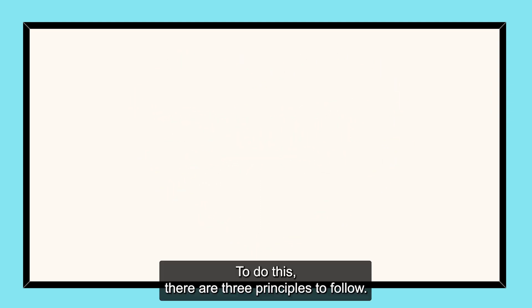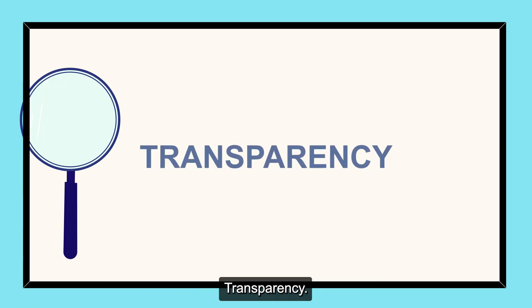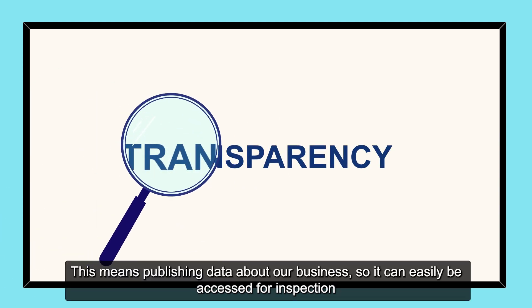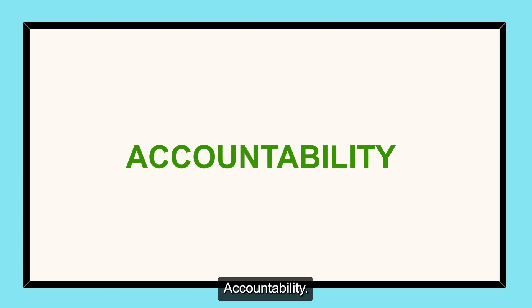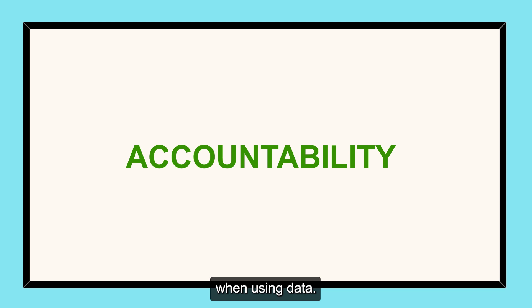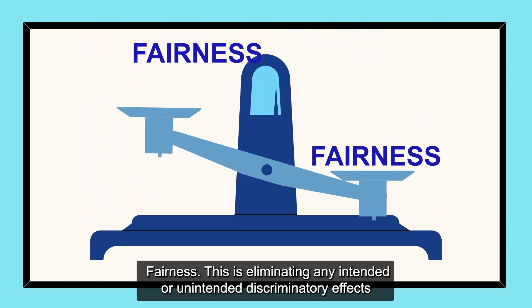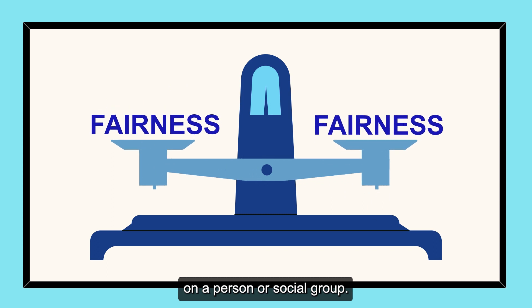To do this, there are three principles to follow. Transparency – this means publishing data about our business so it can easily be accessed for inspection. Accountability – this means that there are effective governance and oversight mechanisms when using data. Fairness – this is eliminating any intended or unintended discriminatory effects on a person or social group.